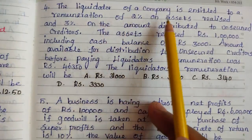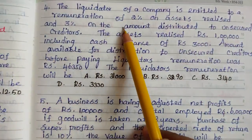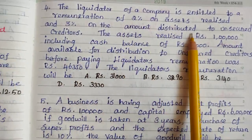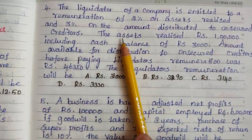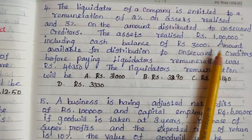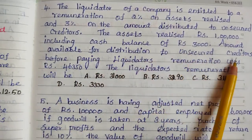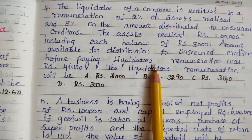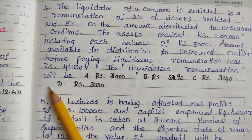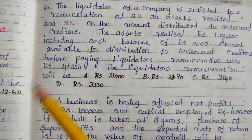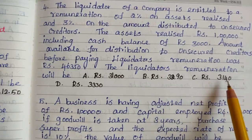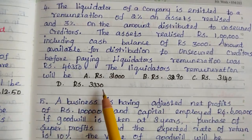The liquidator of a company is entitled to remuneration of 2% on assets realized and 3% on the amount distributed to unsecured creditors. The assets realized Rs.1,00,000 including cash balance of Rs.3,000. Amount available for distribution to unsecured creditors before paying liquidator remuneration was Rs.46,350. The liquidator remuneration will be: options include Rs.3,290 and Rs.3,143.